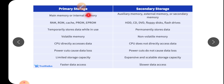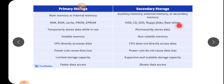If primary memory is not present, the computer cannot work at all. If secondary memory is not present, the computer can still work a little. Examples of primary memory include ROM, RAM, cache, and EPROM. HDD, CD, DVD, floppy, and flash drives are examples of secondary storage devices.